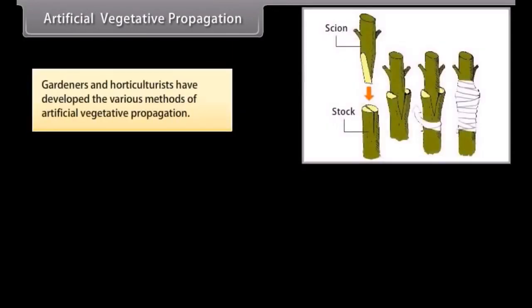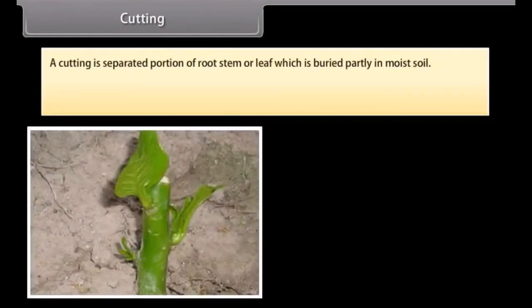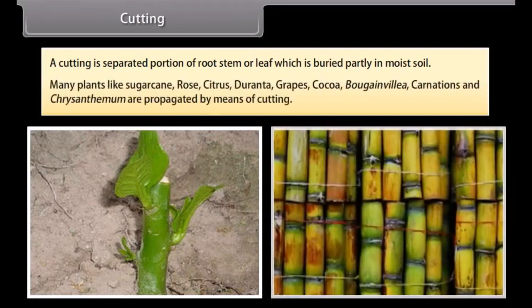Artificial vegetative propagation. Gardeners and horticulturists have developed various methods of artificial vegetative propagation. Some common methods are by cutting, layering, grafting, budding, and tissue culture. A cutting is a separated portion of root, stem, or leaf which is buried partly in moist soil. Many plants like sugarcane, rose, citrus, Duranta, grapes, cocoa, Bougainvillea, carnations, and chrysanthemum are propagated by means of cuttings.